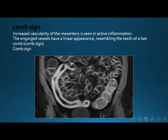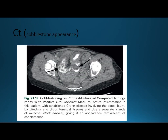This is the comb sign. The comb sign is an engorgement of blood vessels — increased vascularity of the mesentery — seen in acute inflammation. The blood vessels have an appearance like the teeth of a comb. This is also cobblestone appearance on CT — this is contrast CT axial section. We can see this white line is the ulcer.